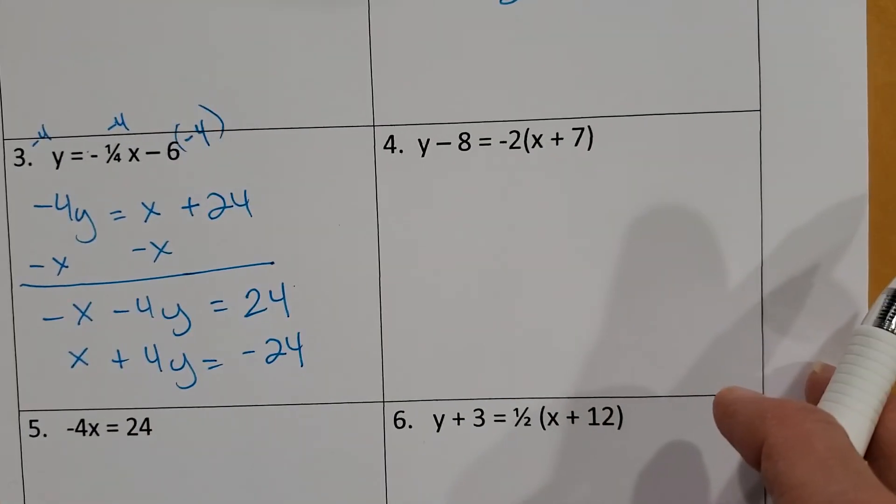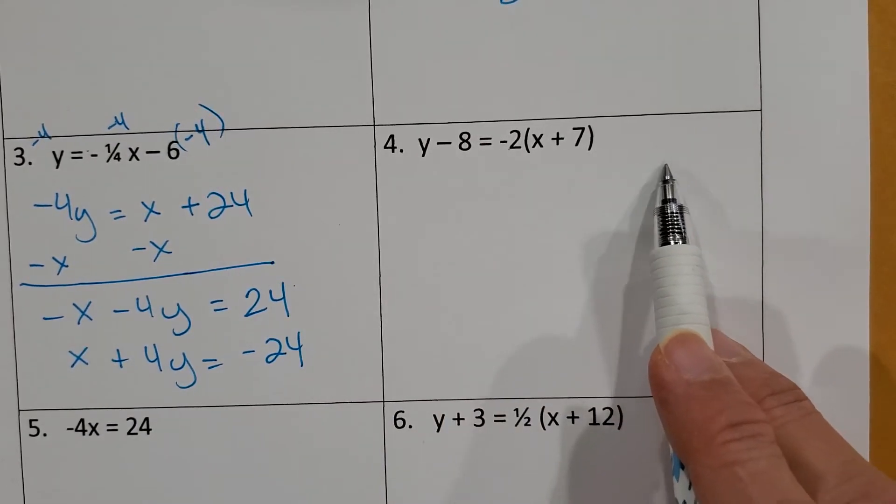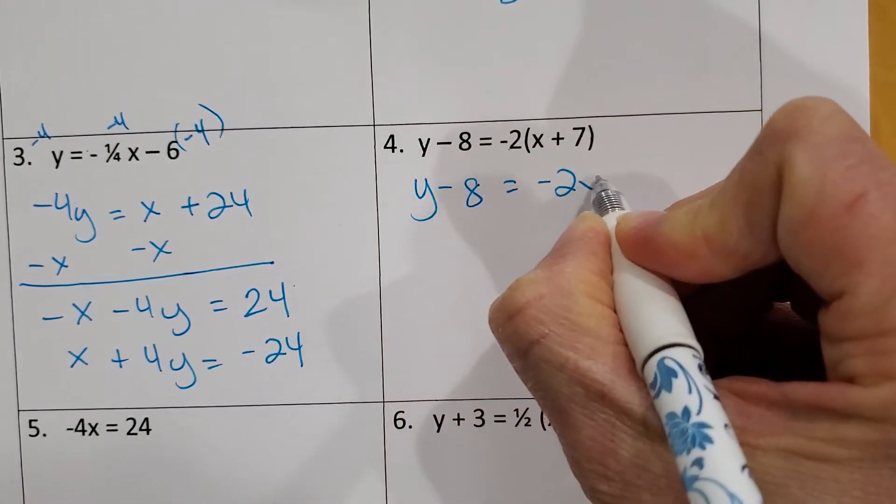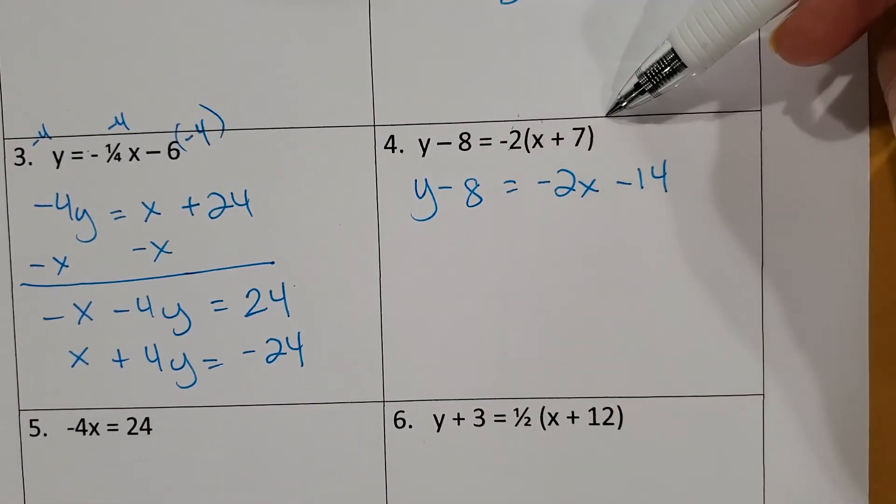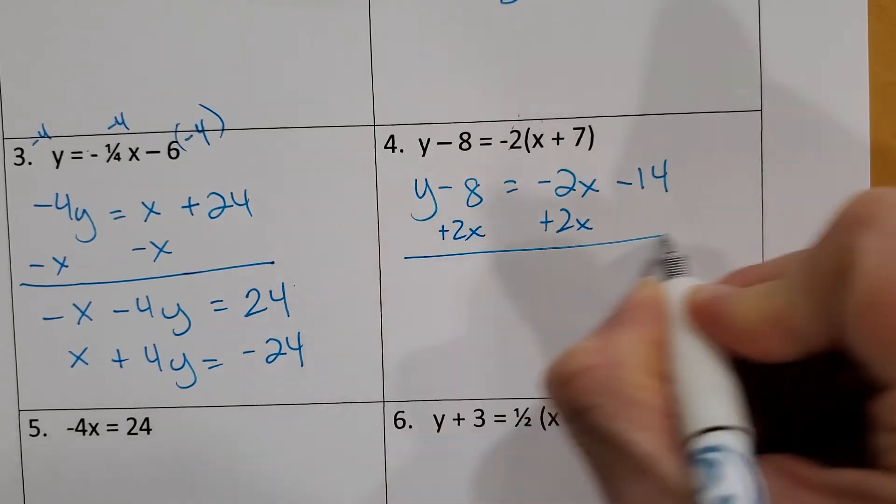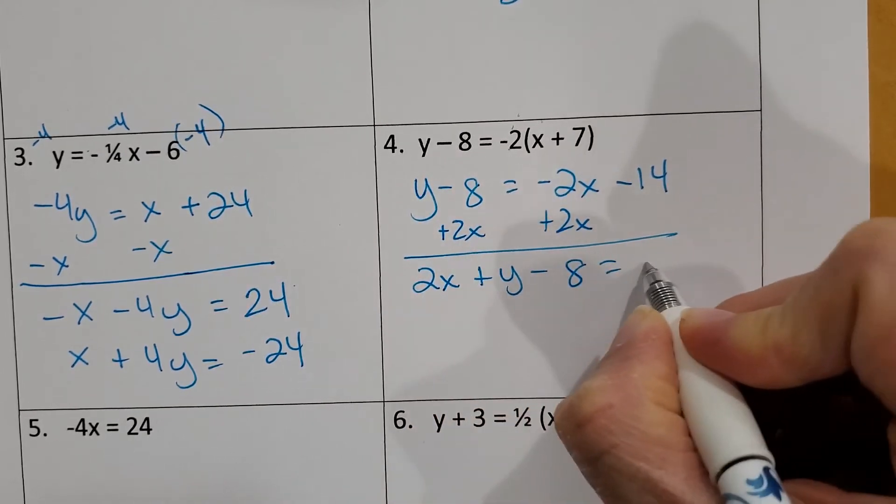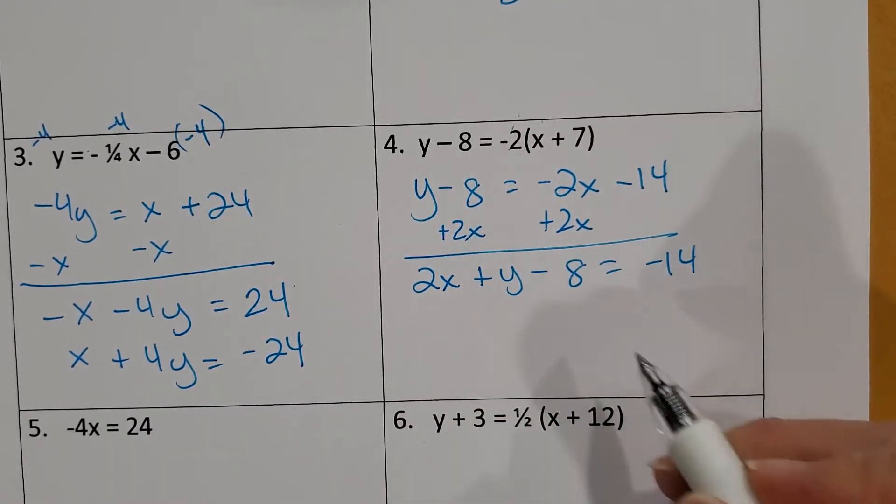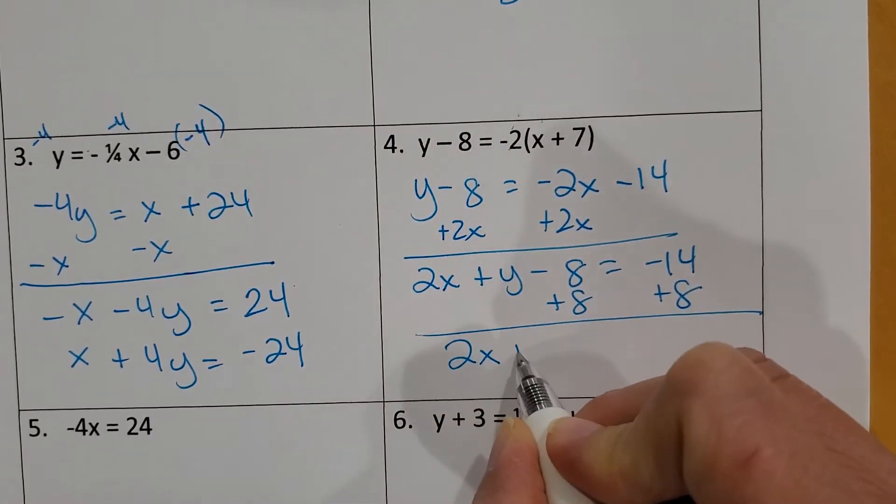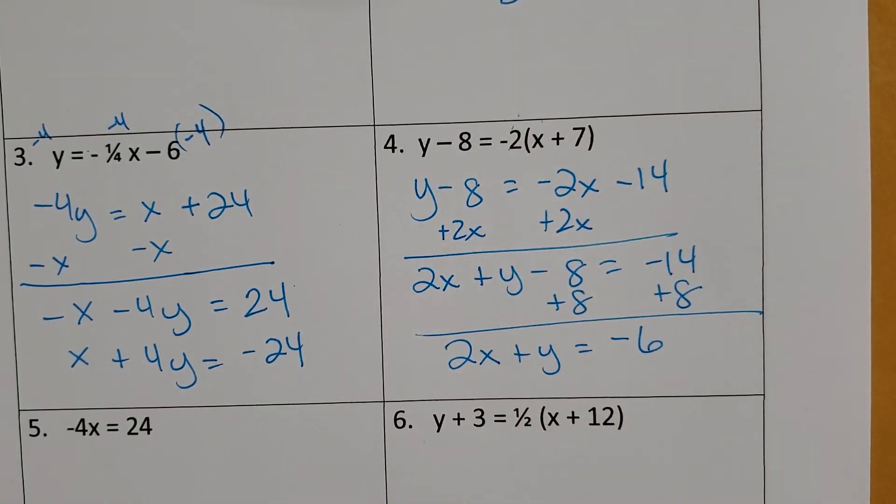All right. This one's in point slope form. We're going to change it to standard form. So we need to get rid of the parentheses. We need to move all the numbers to the right side and X to the other side. So Y minus 8 equals negative 2X minus 14. That's what I get when I distribute. I'm going to add 2X to both sides. So now I'm going to put the 2X first, remember, because I want the X first. And now all I need to do is move this negative 8. So I'm going to add 8 to both sides. So I get 2X plus Y equals negative 6. And now I'm in standard form.